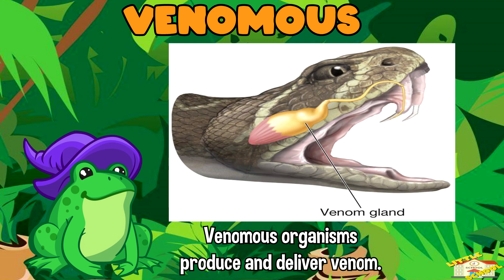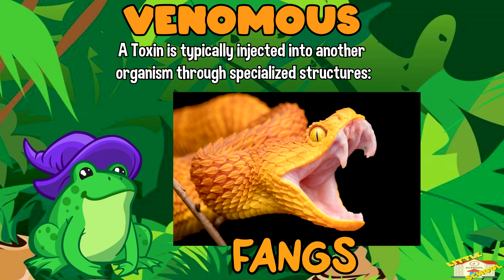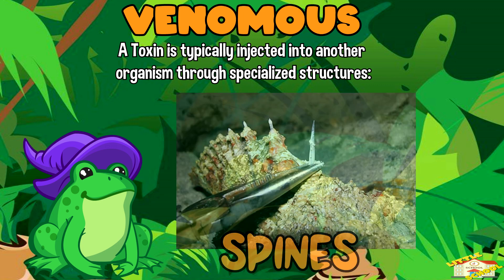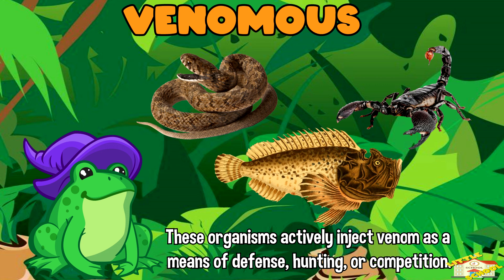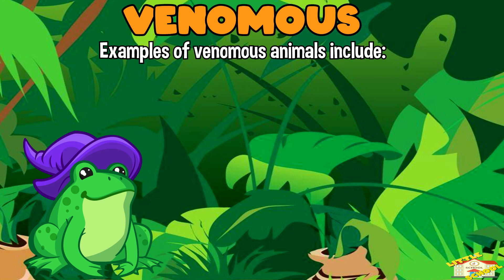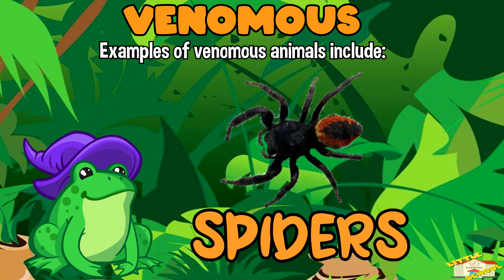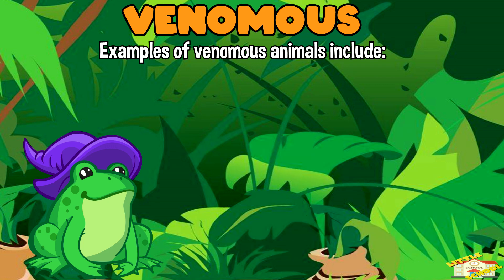Venomous organisms produce and deliver venom — a toxin that is typically injected into another organism through specialized structures like fangs, stingers, or spines. These organisms actively inject venom as a means of defense, hunting, or competition. Examples of venomous animals include snakes, spiders, scorpions, and some species of fish and amphibians.